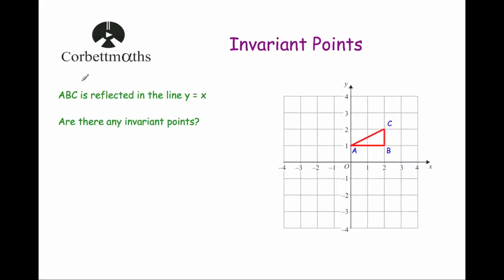Our next question is a bit different. ABC is reflected in the line y equals x. Just remember that any point on a mirror line, when reflected, will stay in the same position. Reflecting the triangle: A moves half a diagonal to a new position, B moves half a diagonal, and C stays where it is — so C is one invariant point. There is another one: the point (1, 1), which is the midpoint of AB, lies on the mirror line y equals x. So when the triangle was reflected it stayed where it was. There are actually two invariant points: point C and point (1, 1).